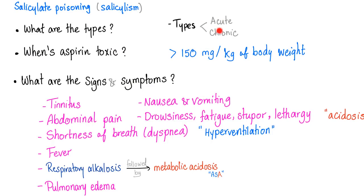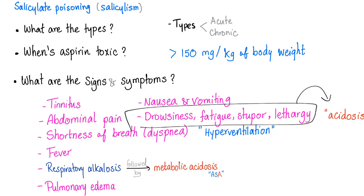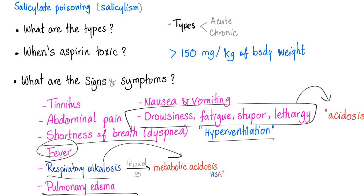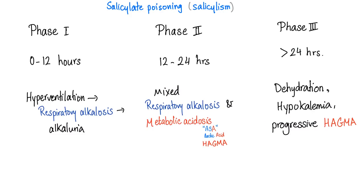Salicylate poisoning — acute or chronic? When is aspirin toxic? Depending on body weight, more than 50 mg per kg. Signs and symptoms of salicylism: tinnitus, nausea, vomiting, abdominal pain, drowsiness, fatigue, stupor, and lethargy — because your body is trying to stay still to decrease the acidosis. Shortness of breath, hyperventilation, fever, respiratory alkalosis followed by metabolic acidosis, and pulmonary edema.